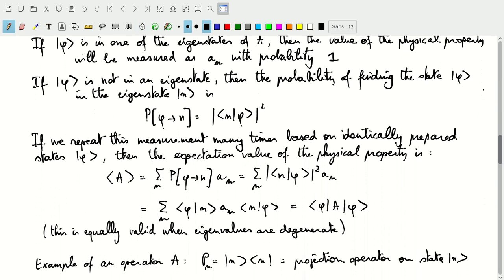So, if we were to repeat this measurement many times based on identically prepared states phi, we can talk about probabilities in a frequentist approach. Then there's going to be an expectation value for the physical property, which in the frequentist approach statistics corresponds to the mean value.